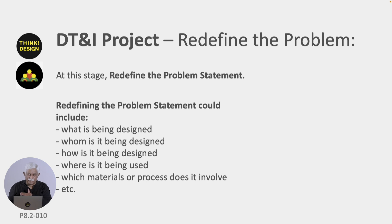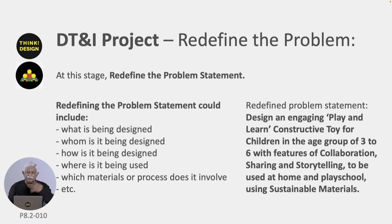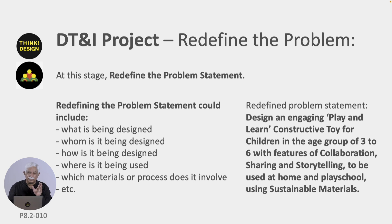Let us look at an example. We started with a problem statement saying it is a toy for children — that was the initial problem statement. Now, having done secondary research, primary research, analysis part one, and analysis part two, you have a much better understanding of the needs for this problem space. So you can define the problem statement now with a lot more detail.